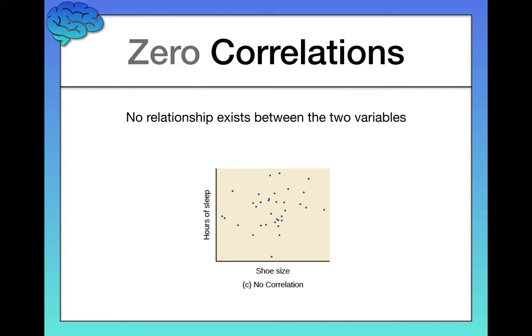Now, what you're looking at here, by the way, is the correlation between the number of hours of sleep participants got the night before and their shoe size. And this makes sense that it's a zero correlation, because we have no reason to predict that people who have bigger feet, for example, might sleep better. It's just going to be a zero correlation, no relationship.